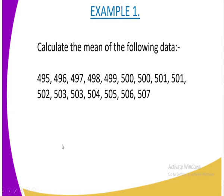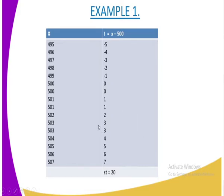Let us look at the following example. We are required to calculate the mean of the following data displayed on our screen: 495, 496, 497 onwards until we reach 507. To calculate the mean, draw a table with column X starting from 495 up to 507, and a column T whereby T equals X minus 500. This 500 is what we refer to as the assumed mean — we have assumed the mean of all these digits is 500.